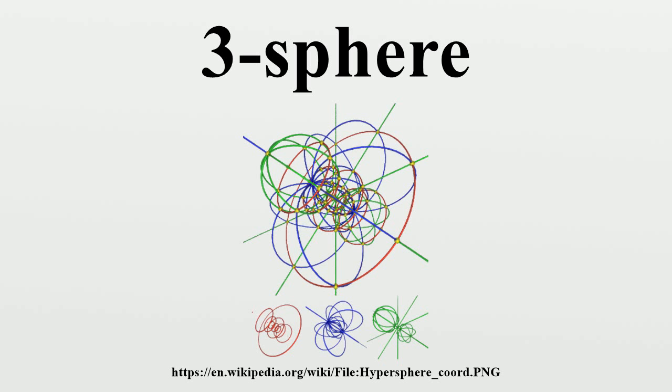Initially Poincaré conjectured that all homology three-spheres are homeomorphic to S3, but then he himself constructed a non-homeomorphic one, now known as the Poincaré homology sphere. Infinitely many homology spheres are now known to exist. For example, Dehn filling with slope 1/n on any knot in the three-sphere gives a homology sphere, typically not homeomorphic to the three-sphere.